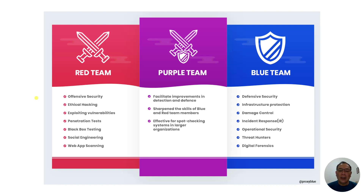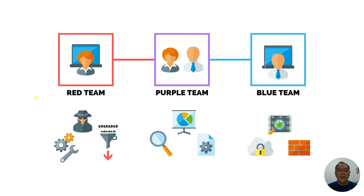The purple team facilitates improvement in detection and defense brought about by the red team and blue team. They help sharpen the skills of both teams and effectively check the systems and security in the enterprise. Red team and blue team work together with the purple team, which may also include research and development, to enhance enterprise security.